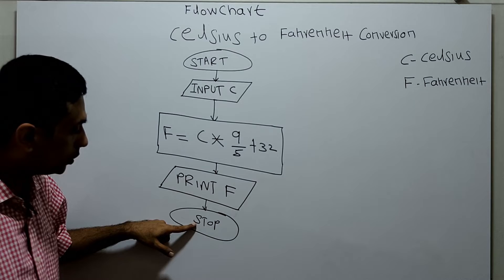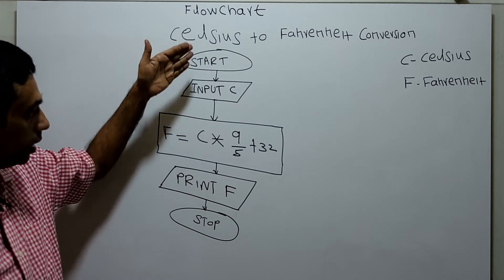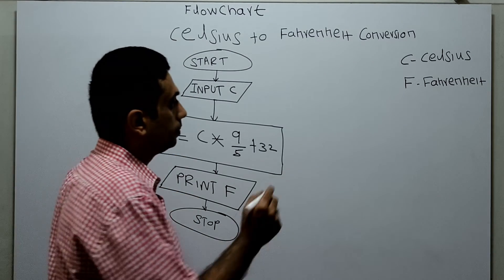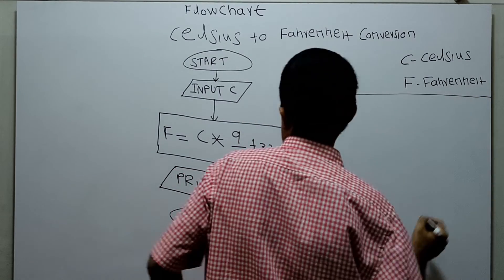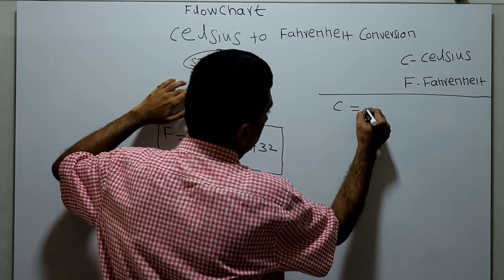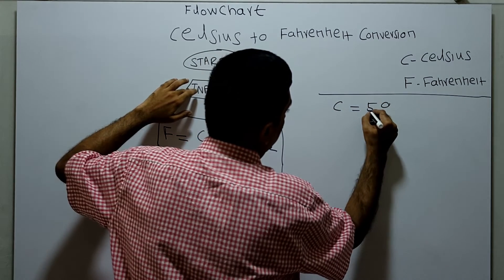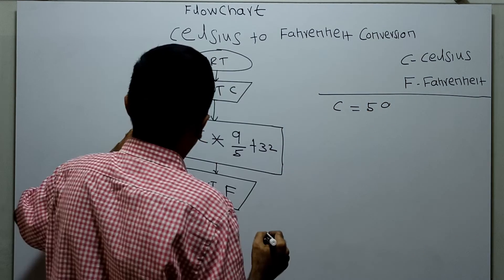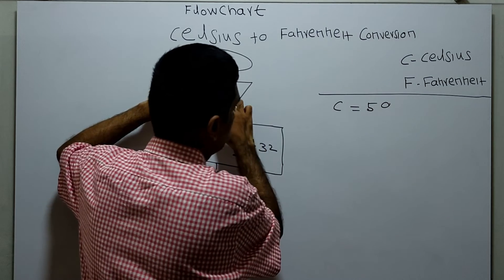And logical stop of the flowchart. Now we will take a sample input and walk through this flowchart. Input C. My centigrade is 50, that means 50 degrees. This is an input which I obtained in this step.